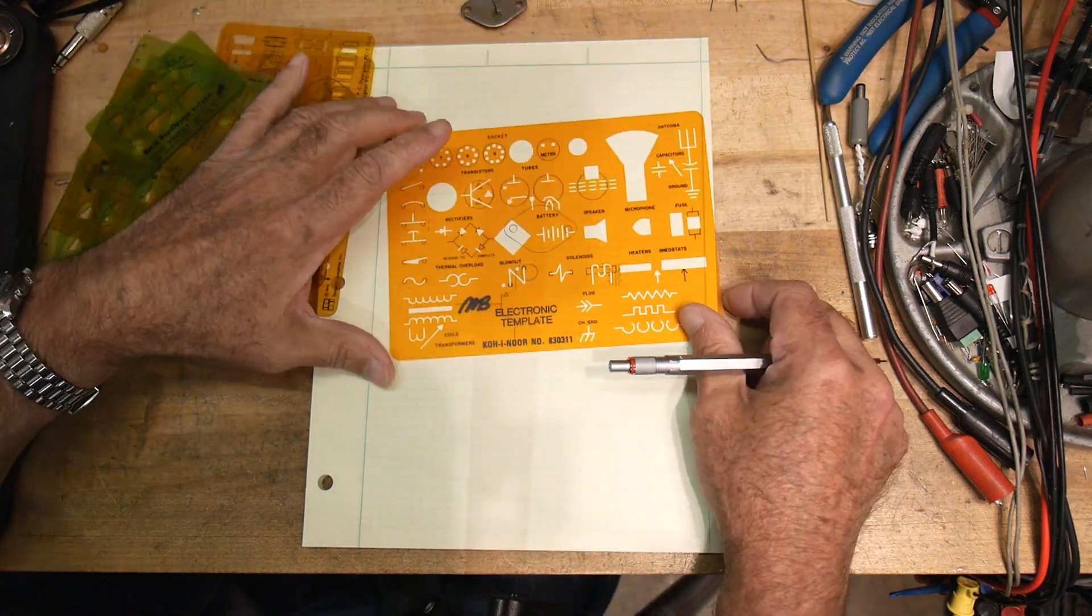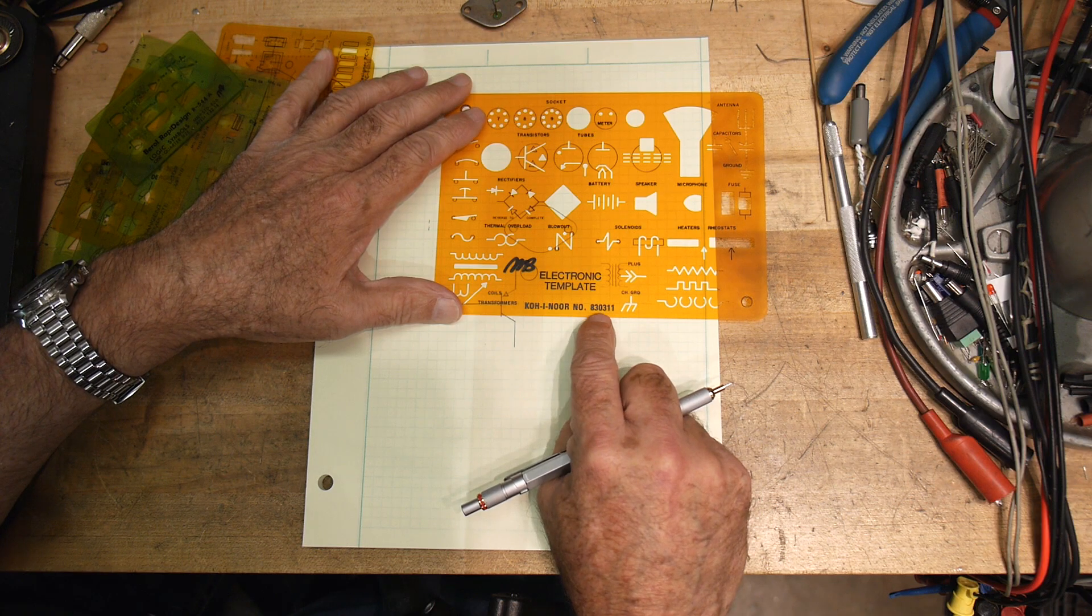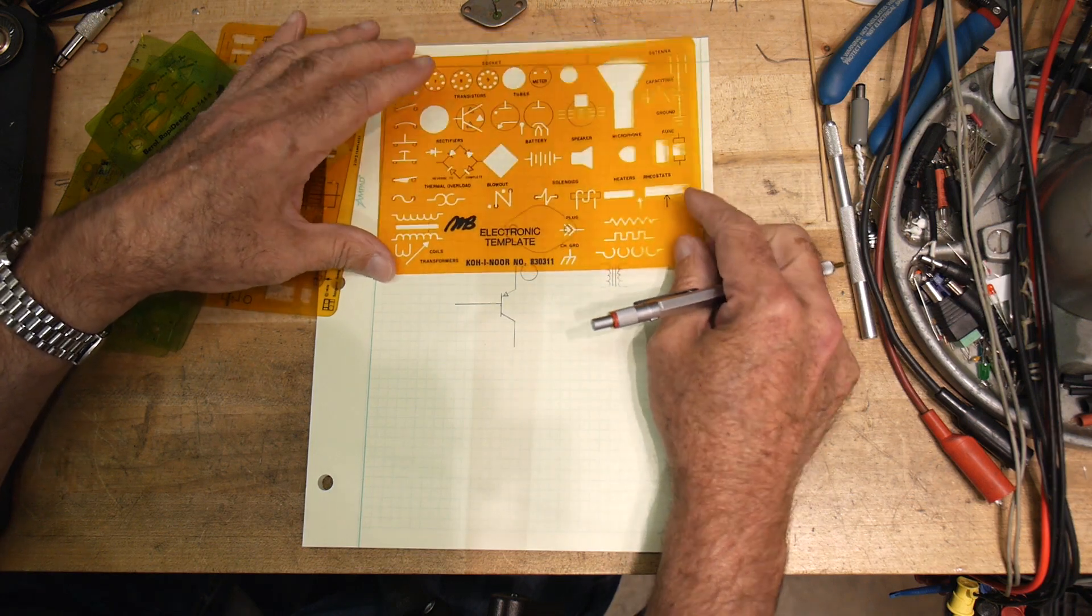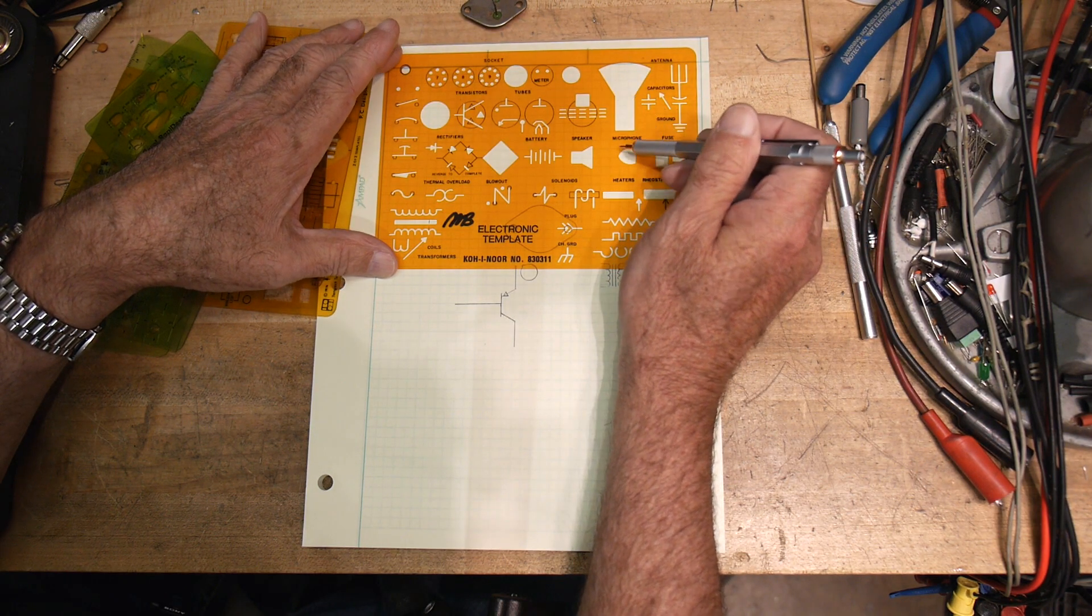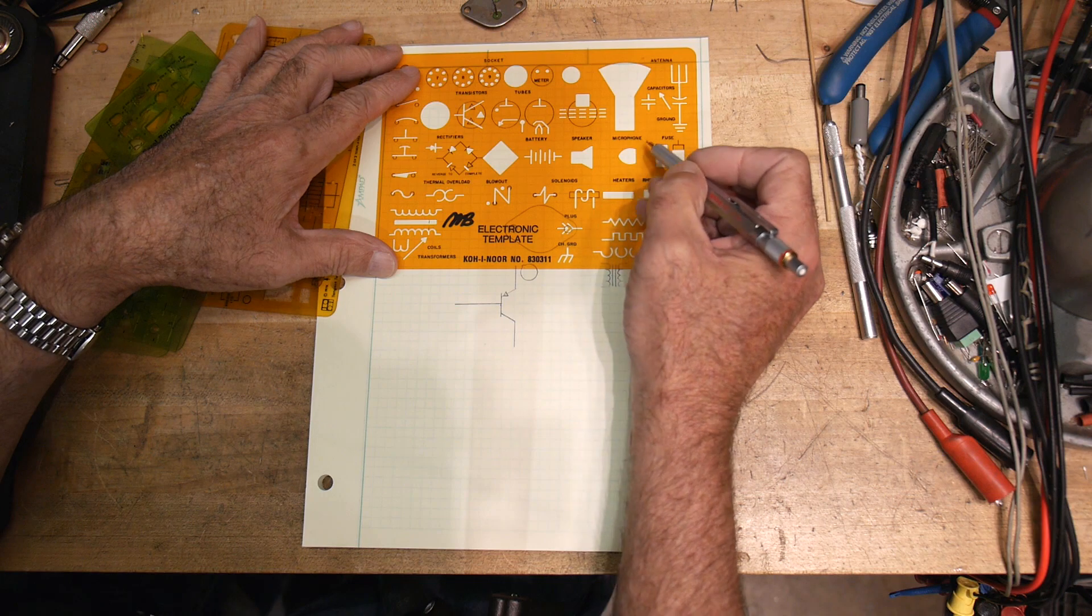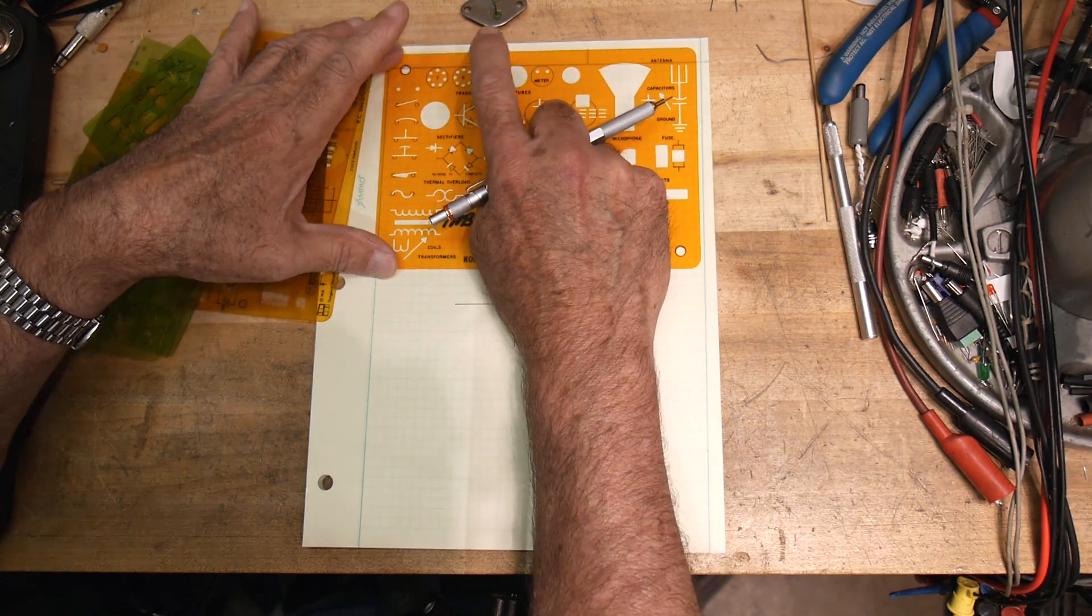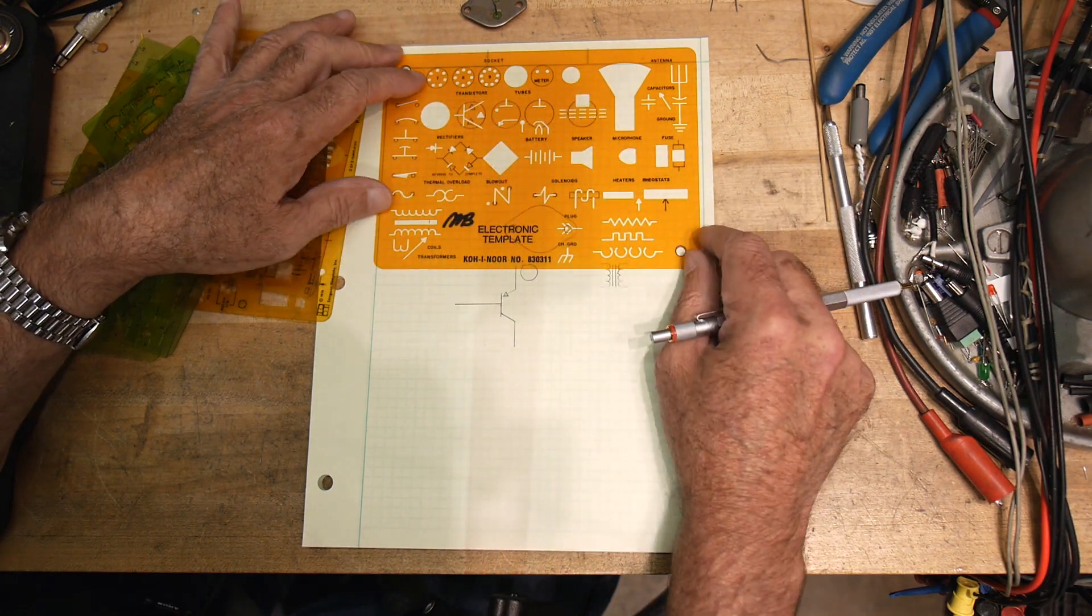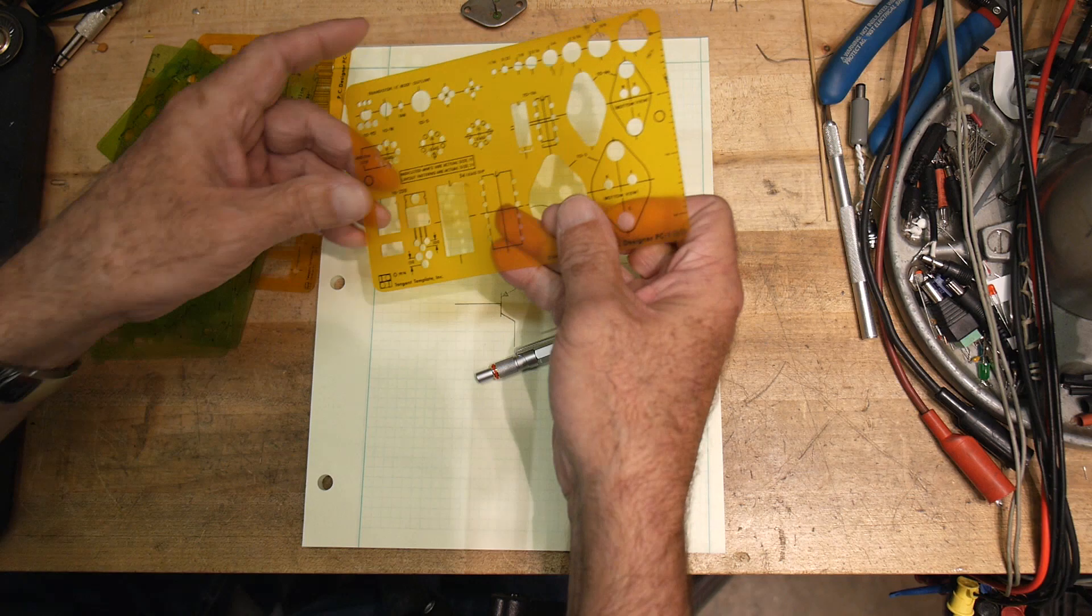Okay, next one is the electronic template Kohanor 830311. This one's pretty sparse. There's not a lot on here. Microphone looks more like a CRT to me. Microphone, speaker. Oh, here we go. This is the speaker. This is the microphone. They don't label this one, but it is a CRT. Here's some vacuum tubes. Sockets. That's kind of a nice feature on this one. Looks like some pushbutton switches over here. Again, it's pretty big though.